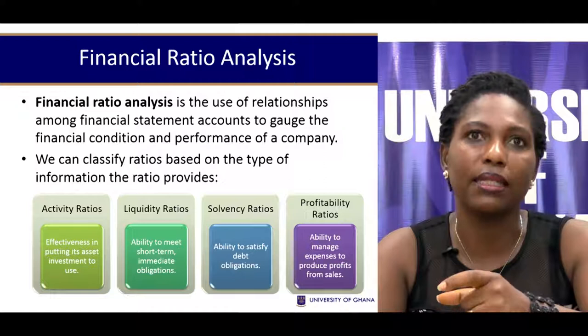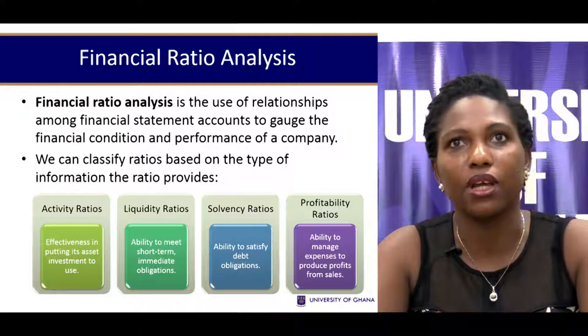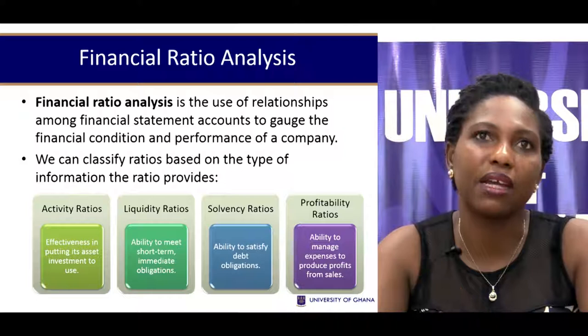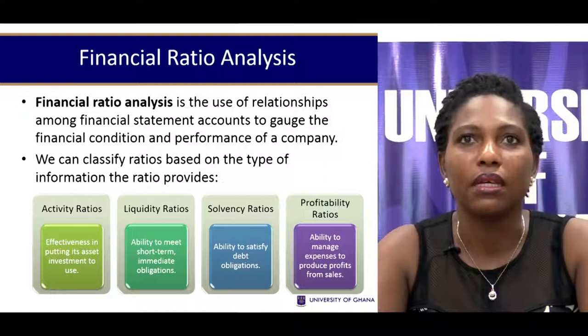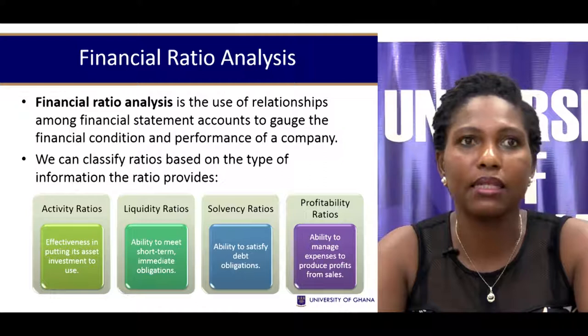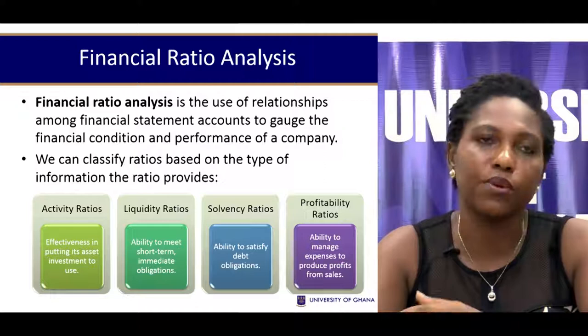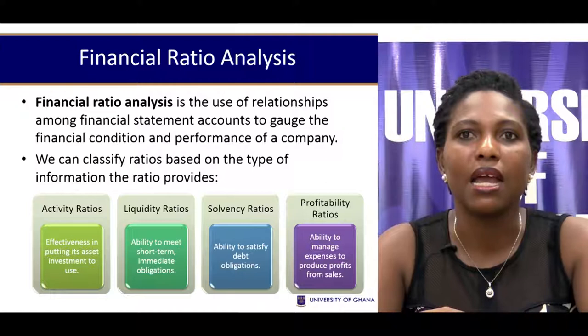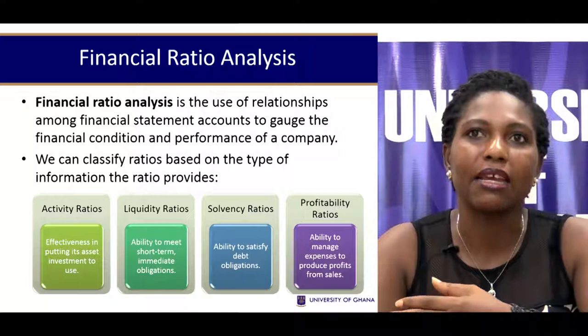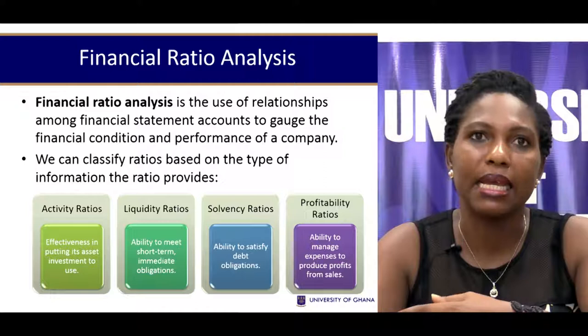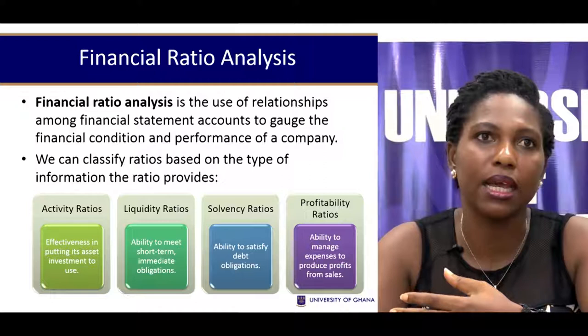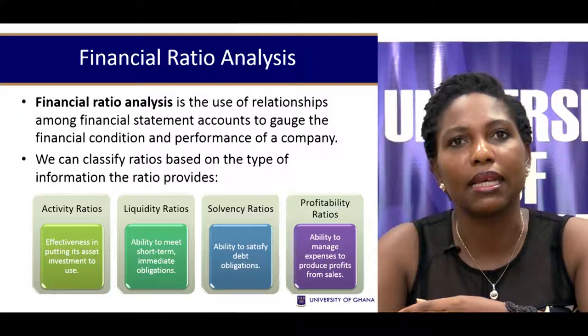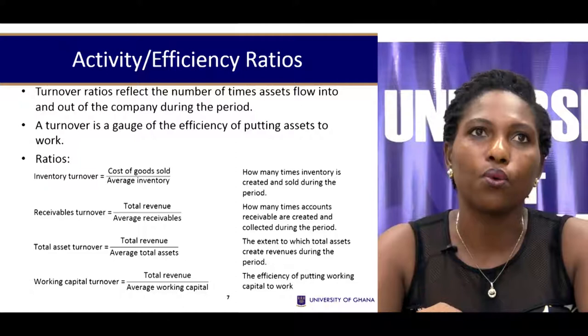Ratios typically measure relations between two entities using their figures. Financial ratio analysis uses the relationships among financial statement accounts to gauge a firm's financial condition and performance. Ratios can be categorized as profitability ratios, solvency ratios, liquidity ratios, and activity ratios — together giving a clearer idea of a firm's financial health, covering expense management, debt management, cash management, and asset utilization.